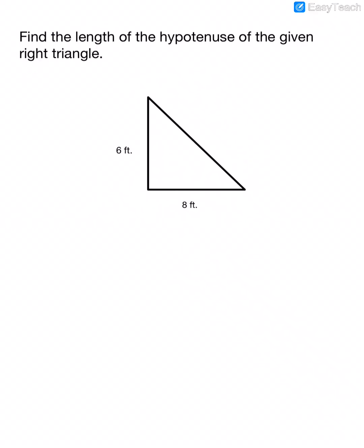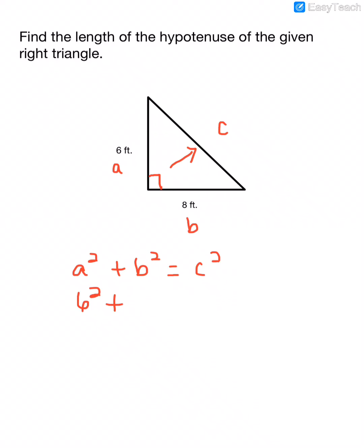This says: find the length of the hypotenuse of the given right triangle. We know that this is the right angle. So the side that's across from the right angle is the hypotenuse — this would be my C. The other two are A and B. It doesn't matter which one is which, so I'm going to say that the side that's 6 feet is A and the side that's 8 feet is B. So if we plug these parts into the Pythagorean Theorem, A squared plus B squared equals C squared, that would put the 6 where the A is, the 8 where the B is, and we're looking for C.